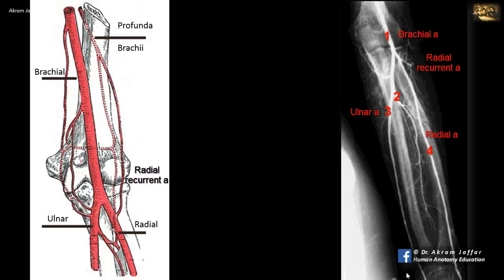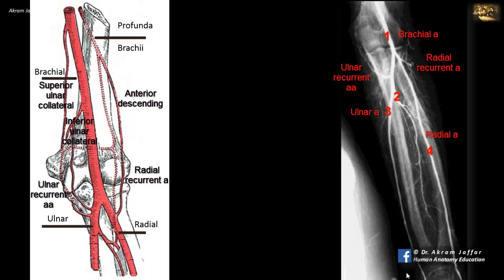The radial recurrent artery is recurrent — it goes upward and anastomoses with the anterior descending branch of the profunda brachii artery, which is a branch of the proximal part of the brachial artery. The ulnar artery leaves the cubital fossa in a gentle curve — it is not straight like the radial artery. In the cubital fossa, it supplies the anterior and posterior ulnar recurrent arteries, which recur backwards and anastomose with branches from the brachial artery — the inferior and superior ulnar collateral arteries.